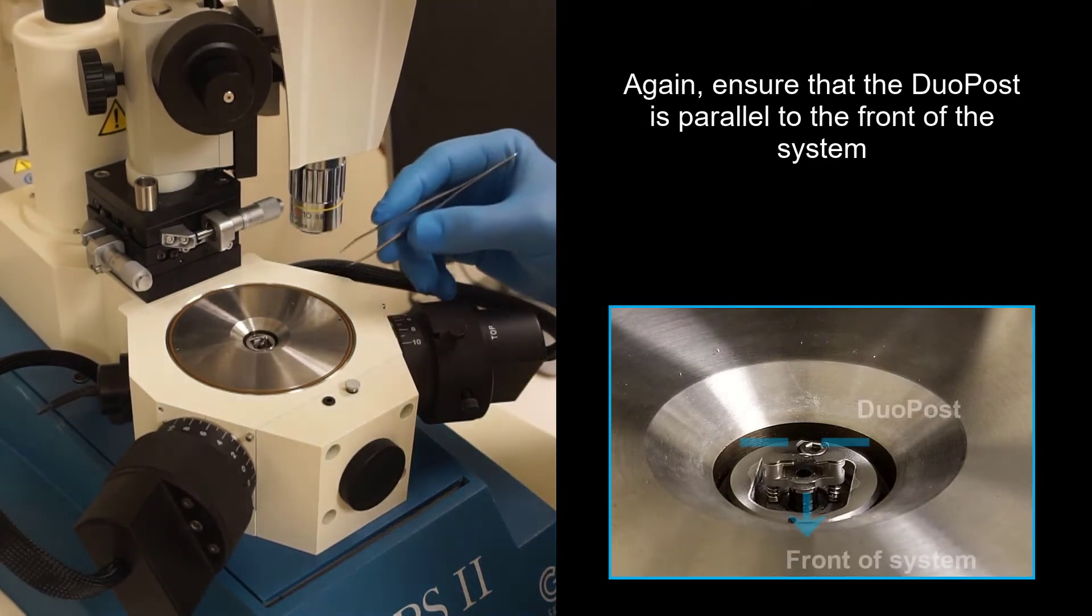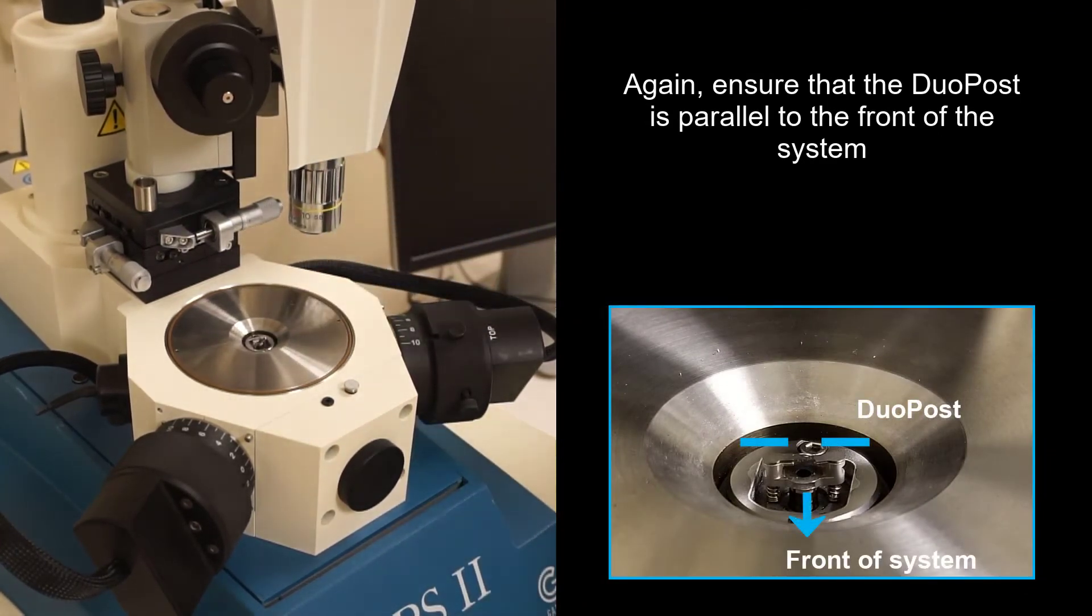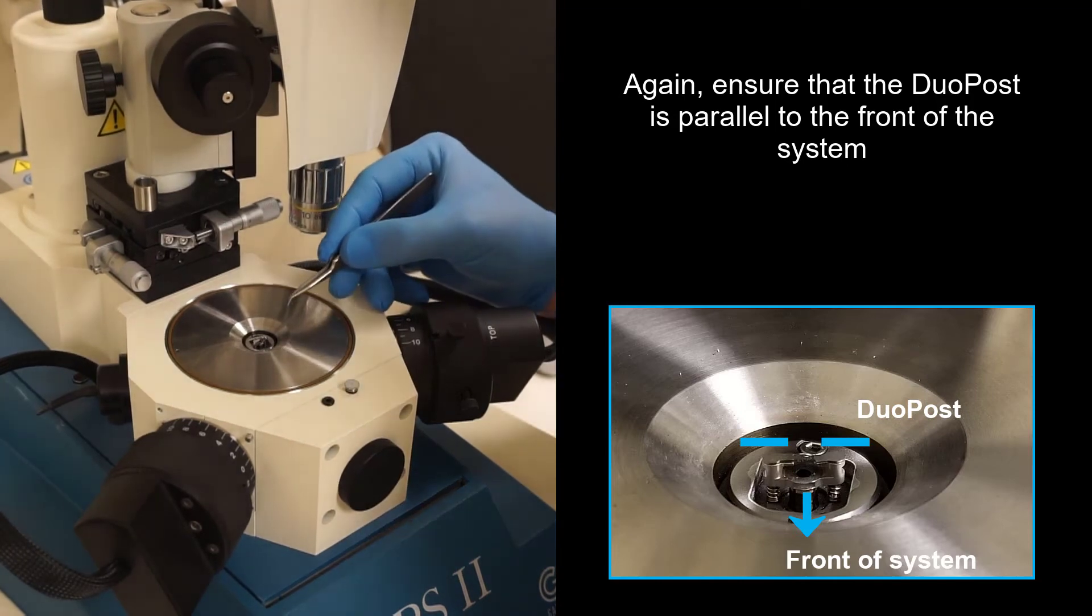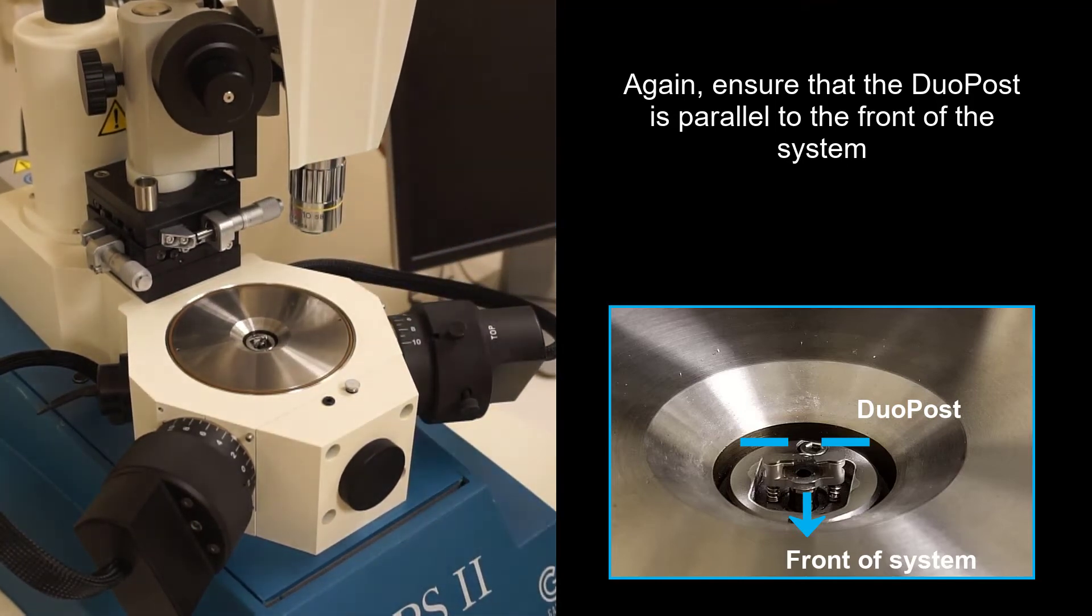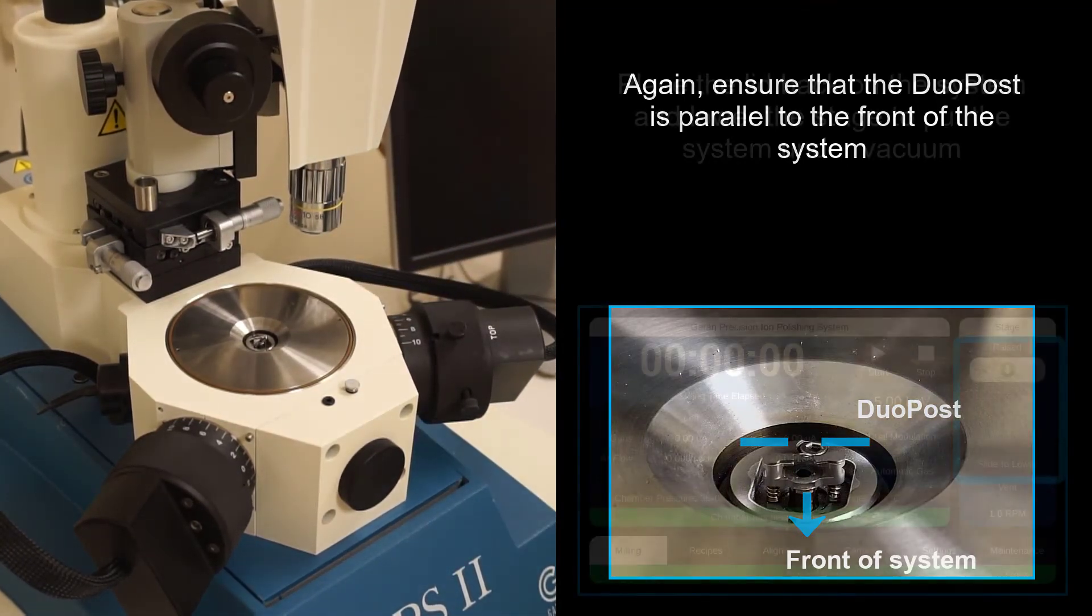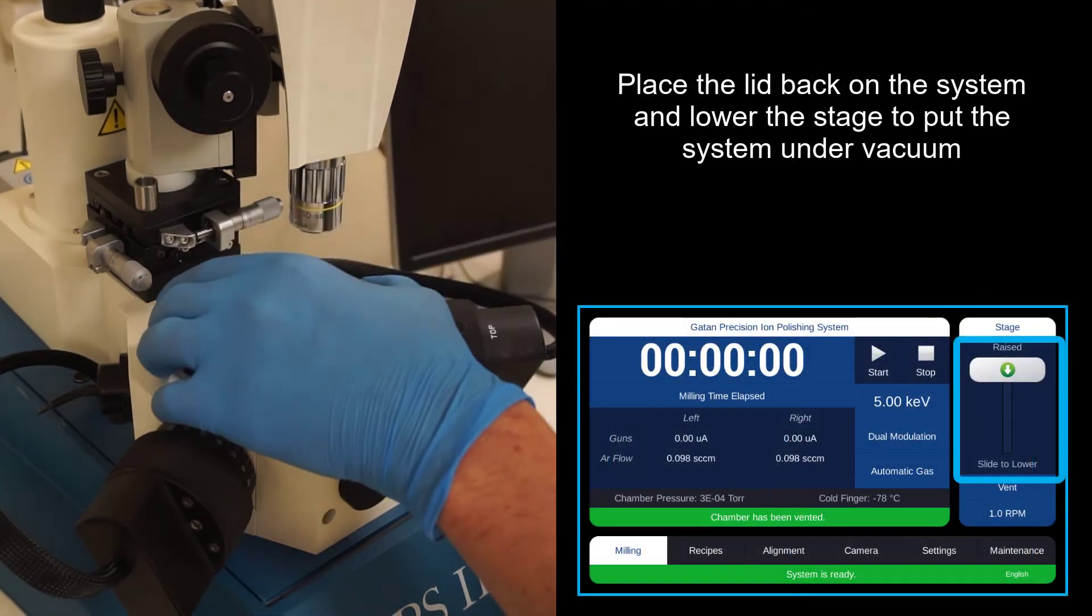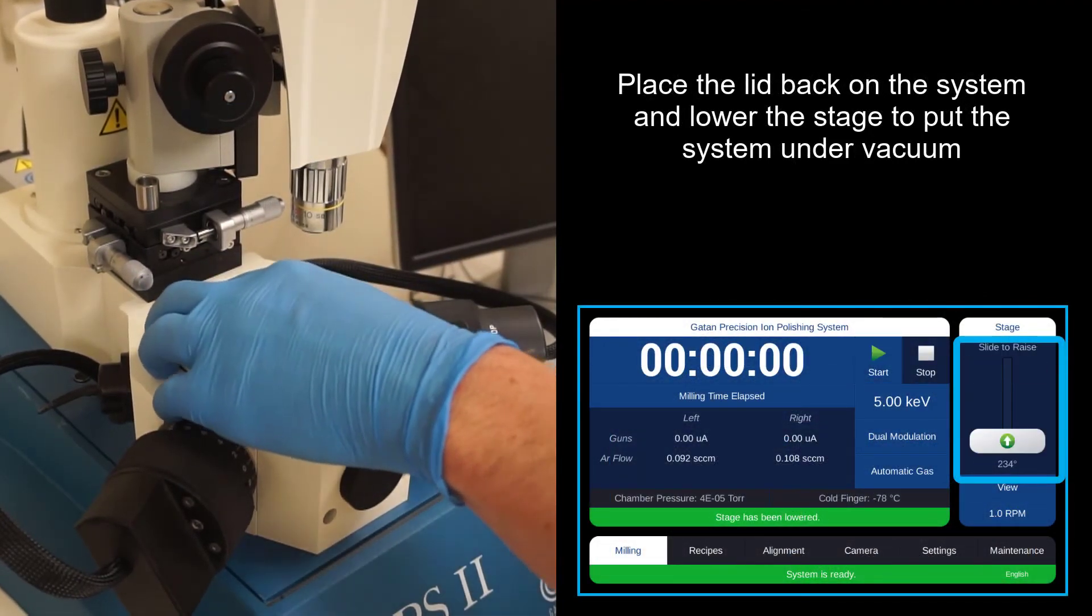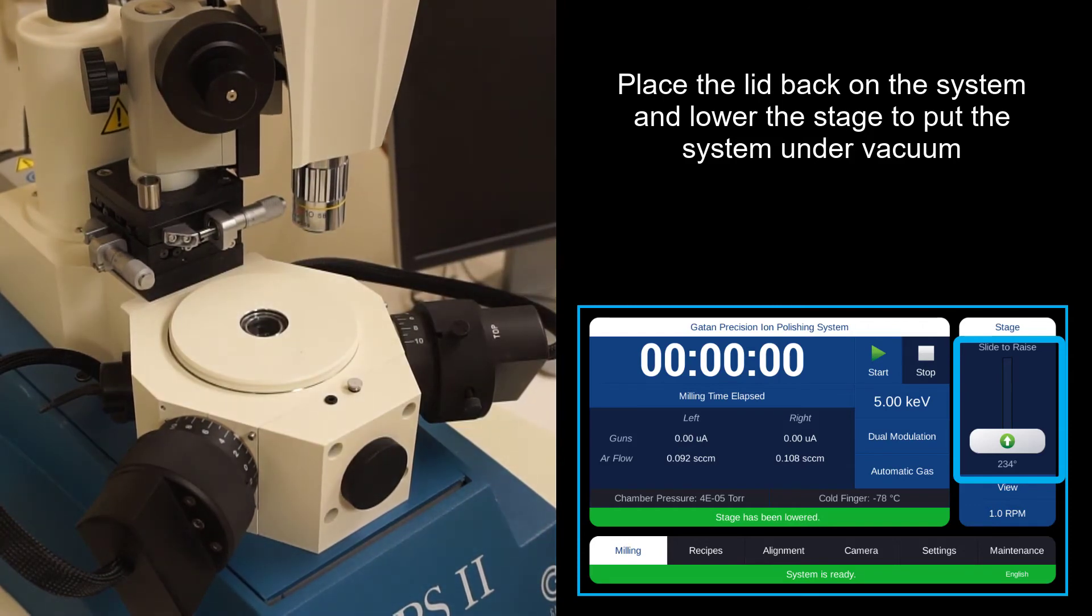Have the sample two arms here parallel with your shoulders and the DuoPost little fingers facing forward. Put the lid back on and now you can lower the stage which will put the chamber under vacuum.